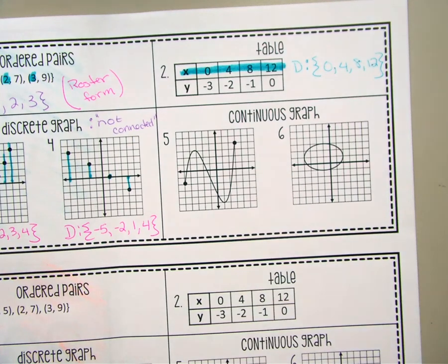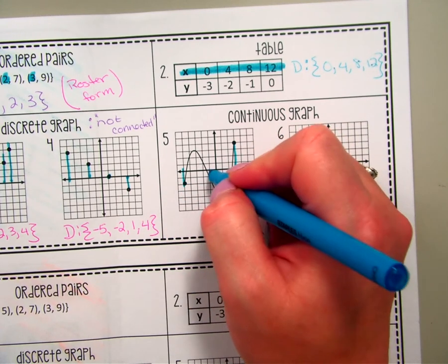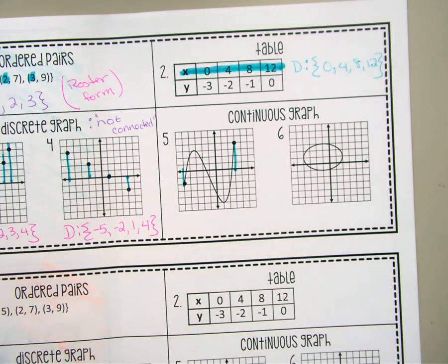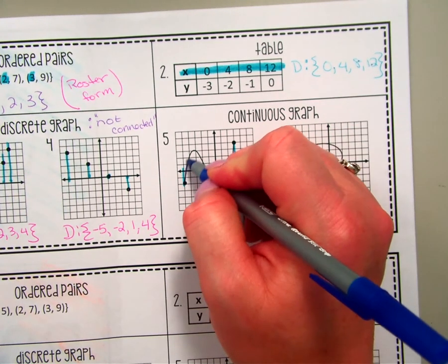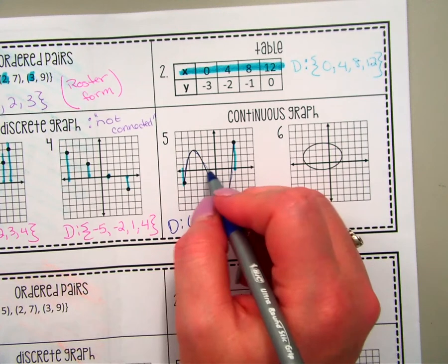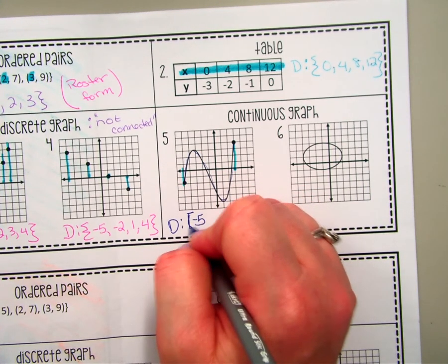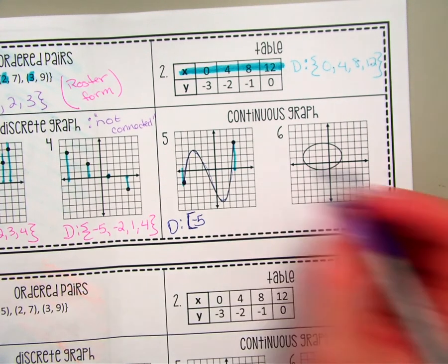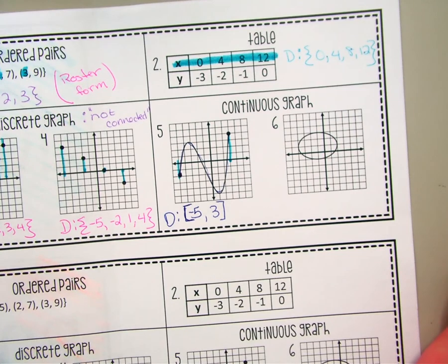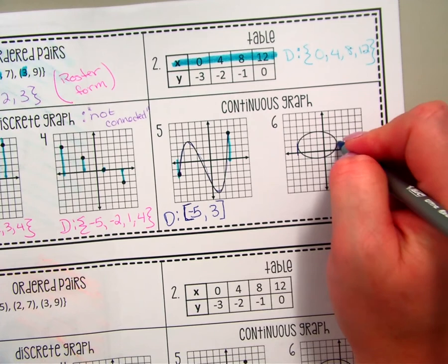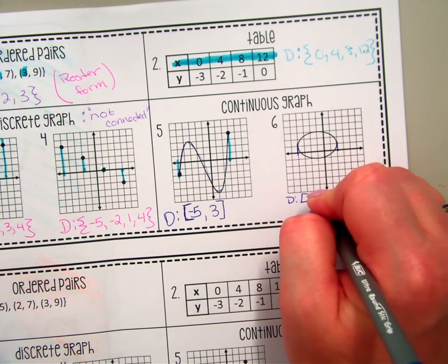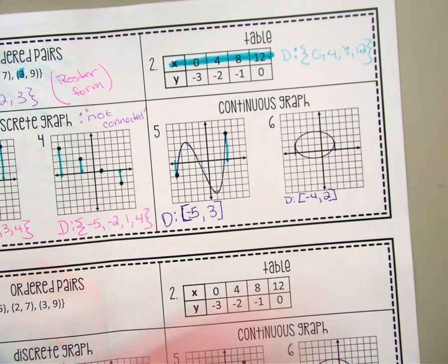For this continuous graph, the x values start at negative 5 and stop at 3. These are different from discrete because the graph is fluid — it's connecting and using every single value in between. So we use interval notation: negative 5 with a bracket because it's a closed point, all the way up to positive 3 — also a closed circle, so that's a bracket too. For graph 6, the interval notation would be negative 4 to 2, and again there are no open circles on the ends, so those are brackets.